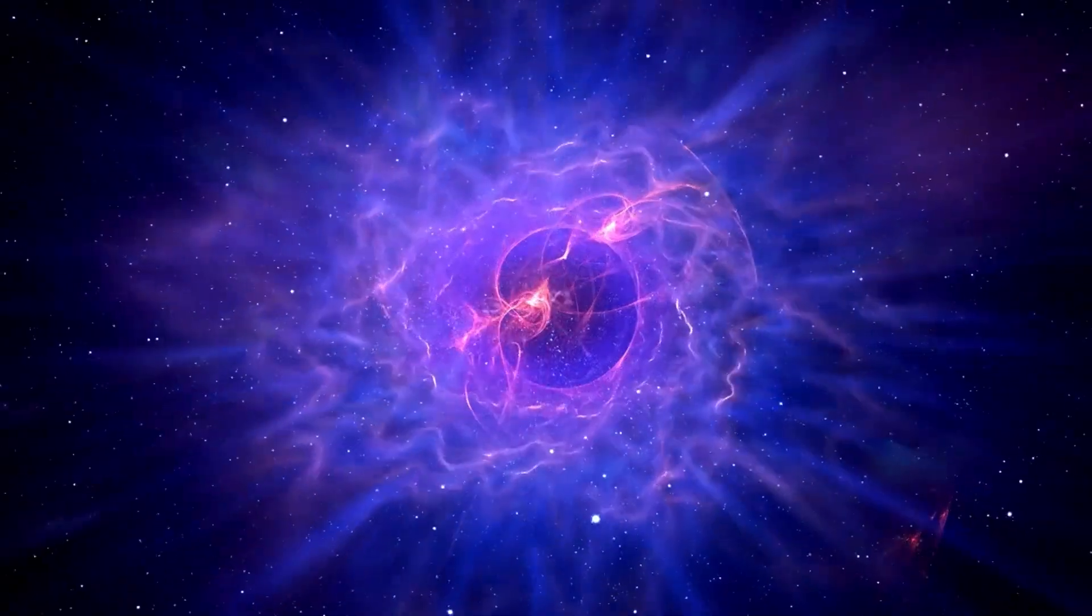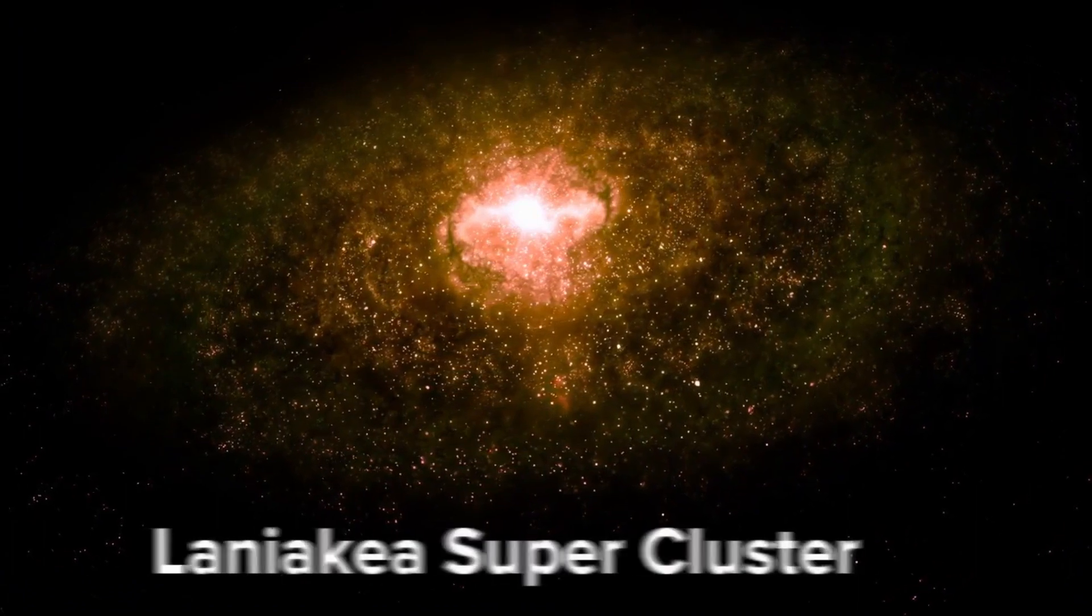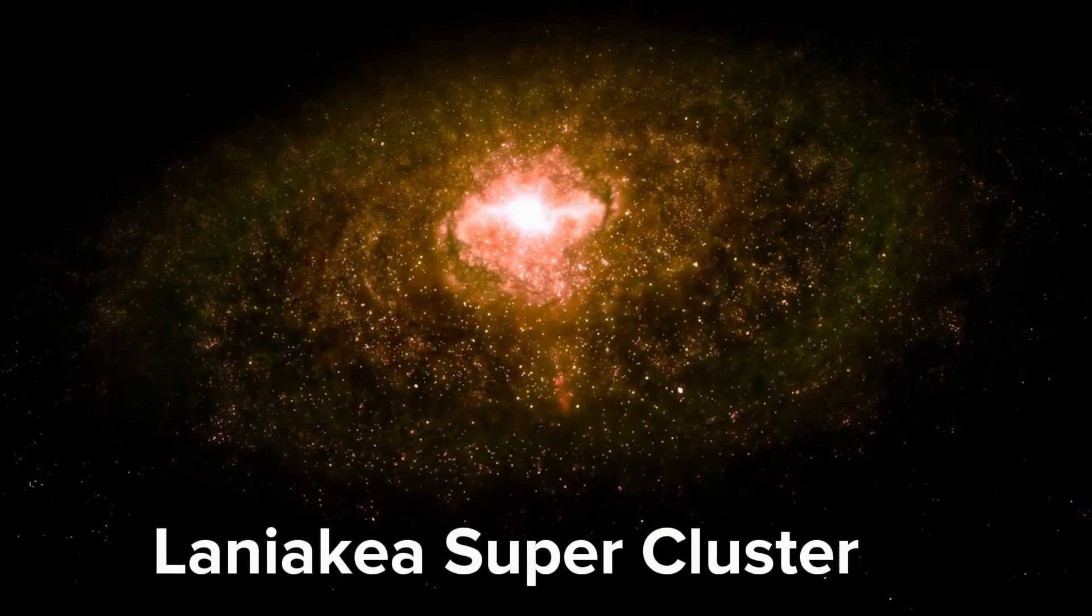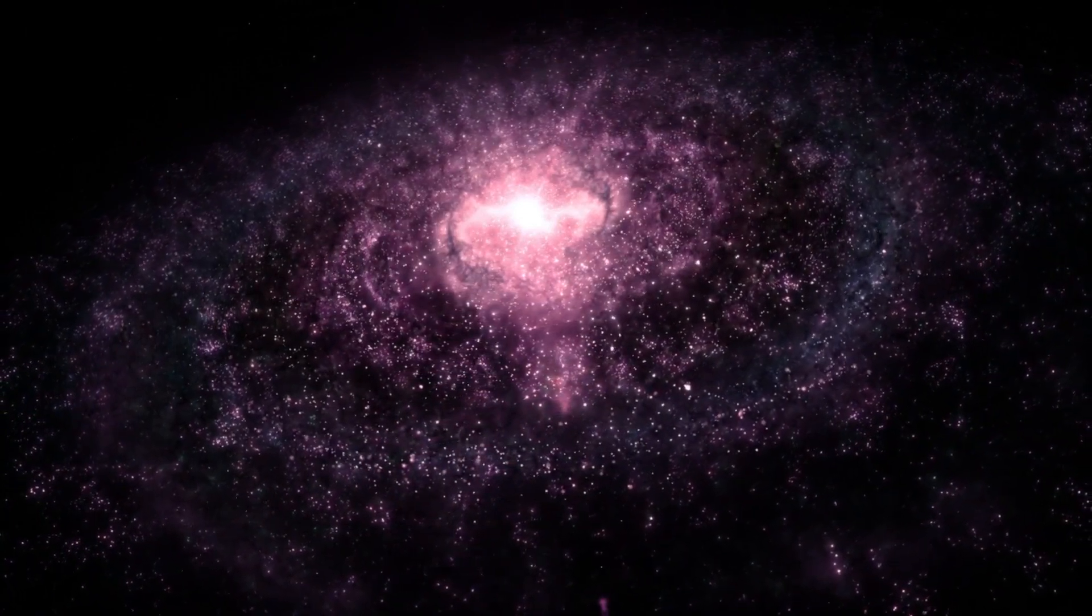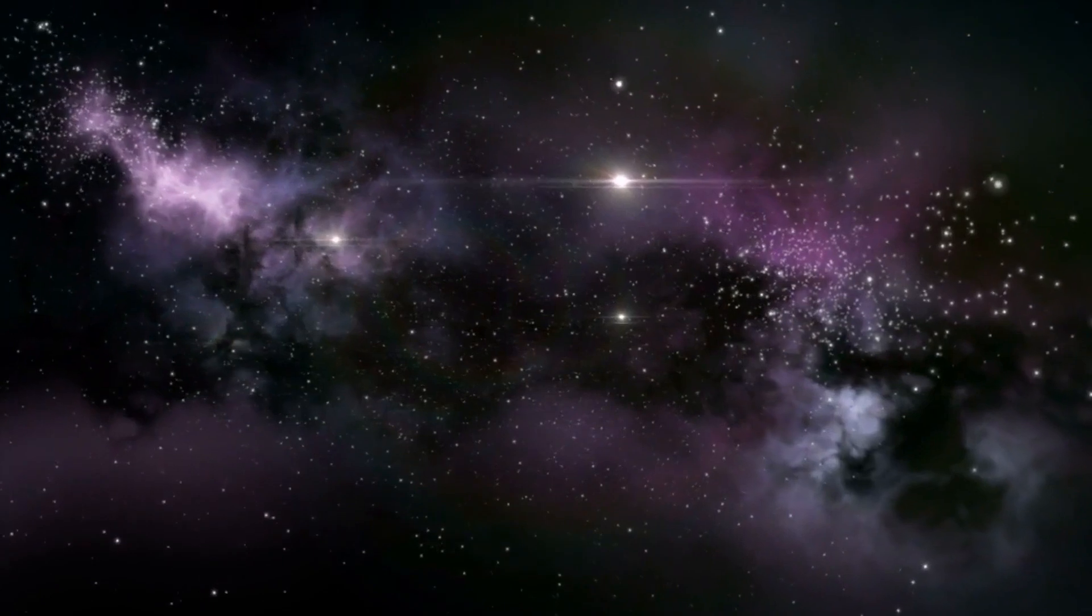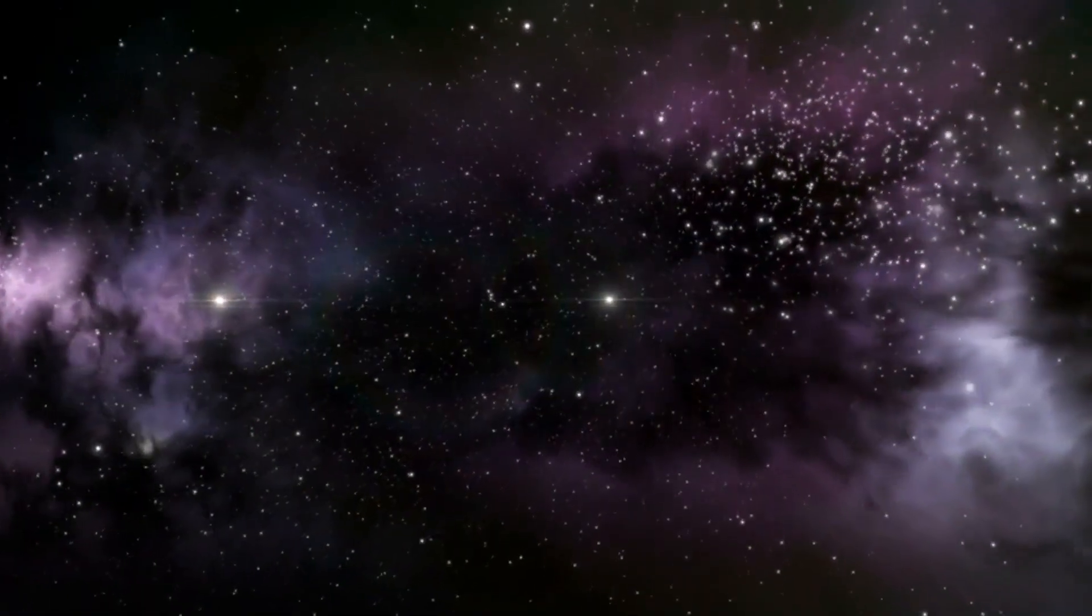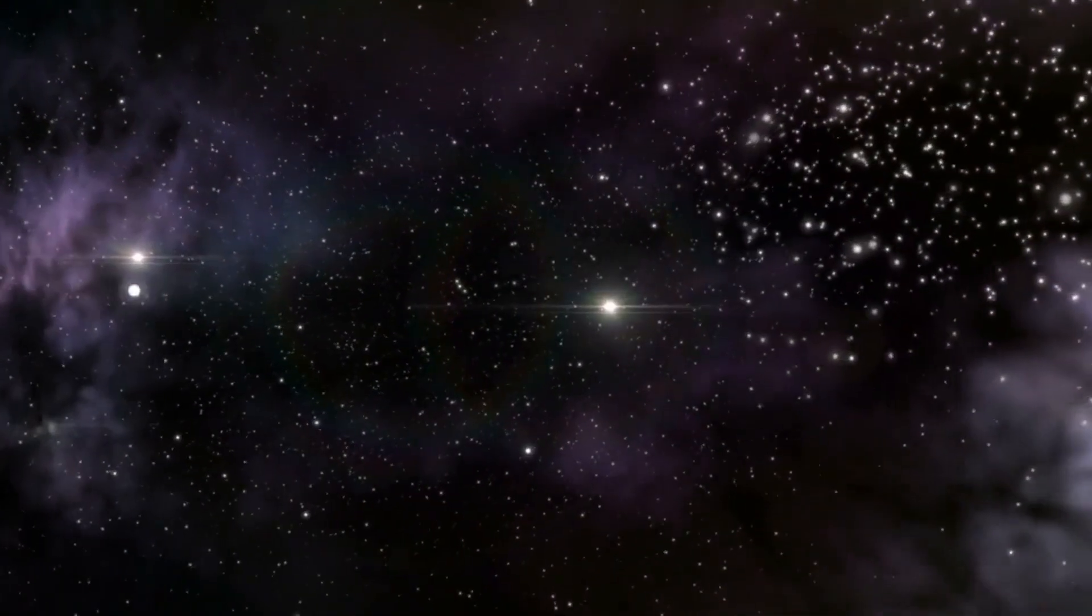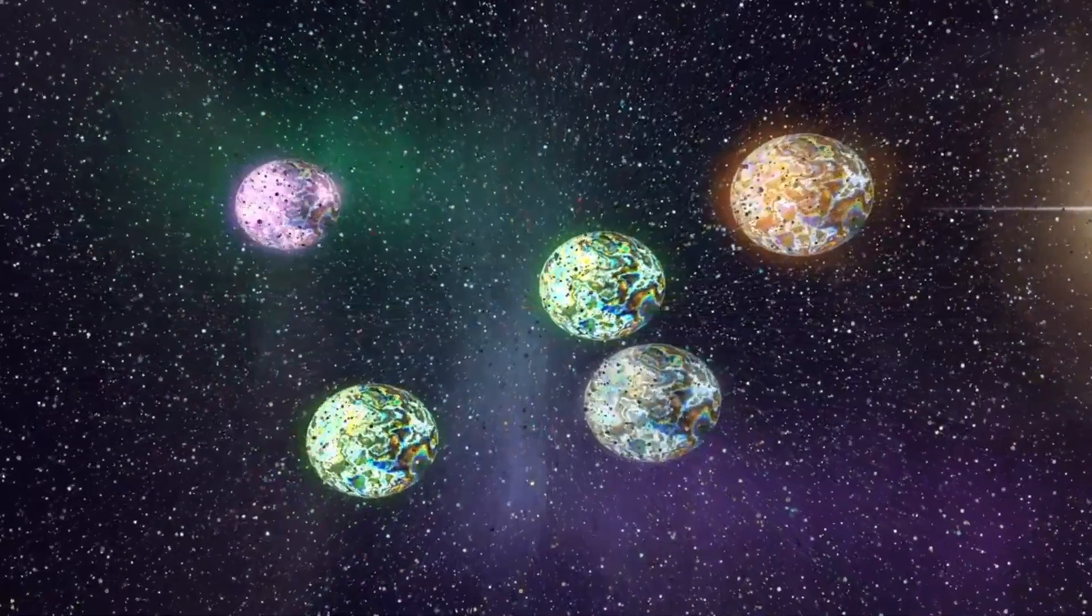But hold on to your seats, because it gets even crazier. Beyond the Virgo supercluster lies the Laniakea supercluster. It's like the VIP section of the universe where all the big shots hang out. This cosmic congregation stretches over 500 million light-years. It's our cosmic home on a grand scale, with a name that means immense heaven in Hawaiian. And let me tell you, it truly lives up to its name.